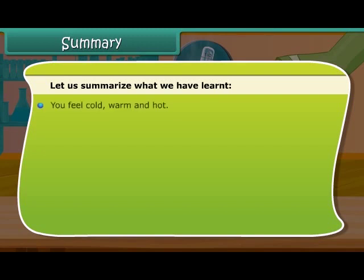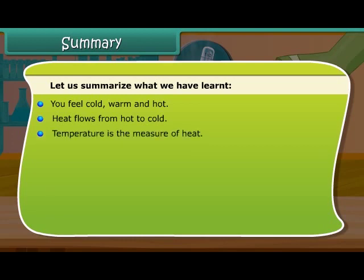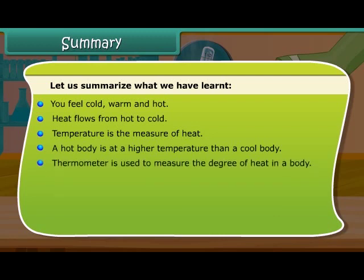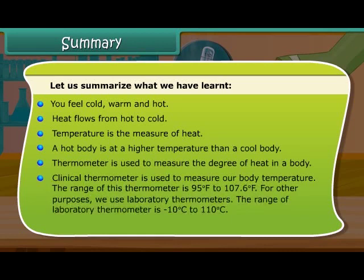Summary: You feel cold, warm and hot. Heat flows from hot to cold. Temperature is the measure of heat. A hot body is at a higher temperature than a cool body. A thermometer is used to measure the degree of heat in a body. A clinical thermometer is used to measure body temperature; its range is 95°F to 107.6°F. For other purposes, we use laboratory thermometers; the range of a laboratory thermometer is minus 10°C to 110°C. The normal temperature of the human body is 98.6°F.